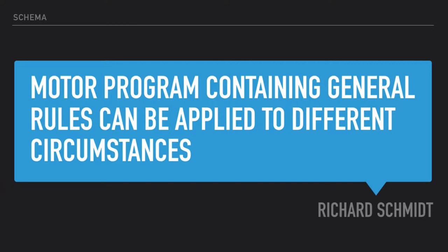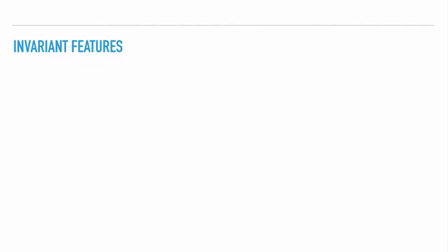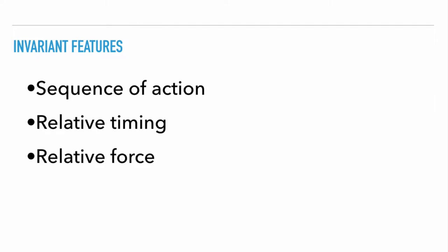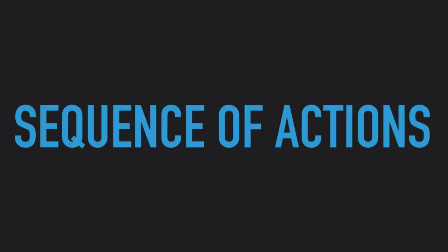In this theory we have invariant features and parameters, and we are going to look at both of these in terms of a basketball shot. Invariant features never change from movement to movement. These include the sequence of action, relative timing, and relative force.